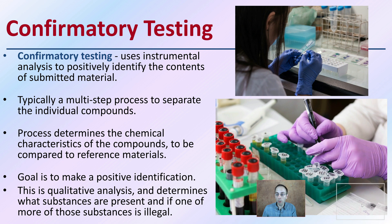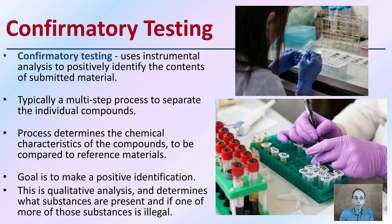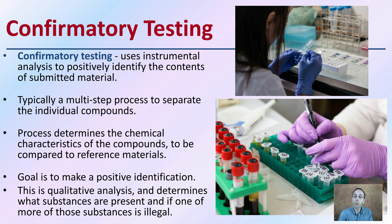Confirmatory tests use instrumental analysis to positively identify the contents of submitted material. Typically it's a multi-step process to separate out individual components and compounds. The process determines the chemical characteristics of the compounds to be compared to reference materials. The goal is to make a positive identification in this qualitative analysis, helping determine what substances are present and if one or more of those substances is illegal. This is typically done in a laboratory setting because it has a high degree of specificity — we want to be very clean, sterile, and isolating. We identify the actual chemical profiles, versus a presumptive test which is more of a positive-negative general indication, and then we identify the specific substances with this confirmatory test performed in a laboratory setting.